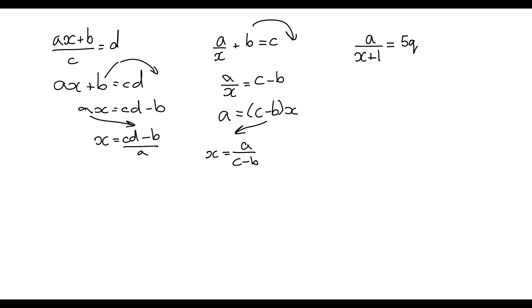In our last problem we have the x on the bottom as part of the denominator. So what we're going to do is multiply by that denominator. So we get a equals x plus 1 times 5q.